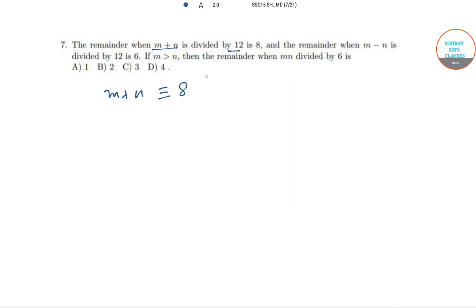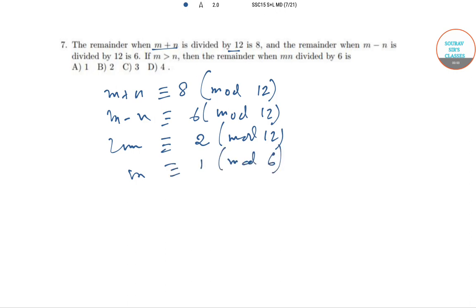This is the way of writing: m+n ≡ 8 (mod 12), and m-n ≡ 6 (mod 12). Adding these two congruency relationships, we get 2m ≡ 2 (mod 12), which implies m ≡ 1 (mod 6).